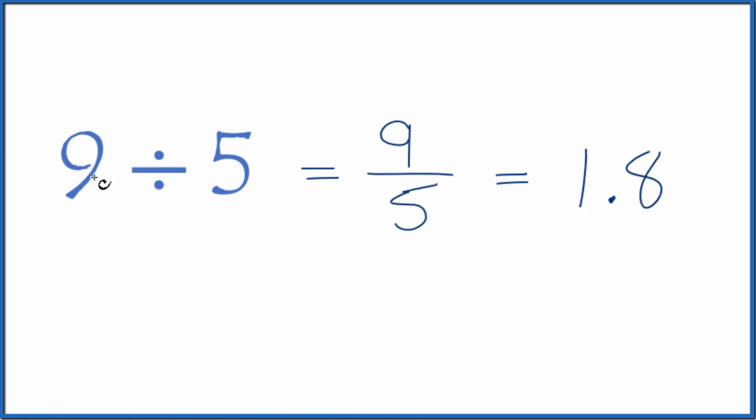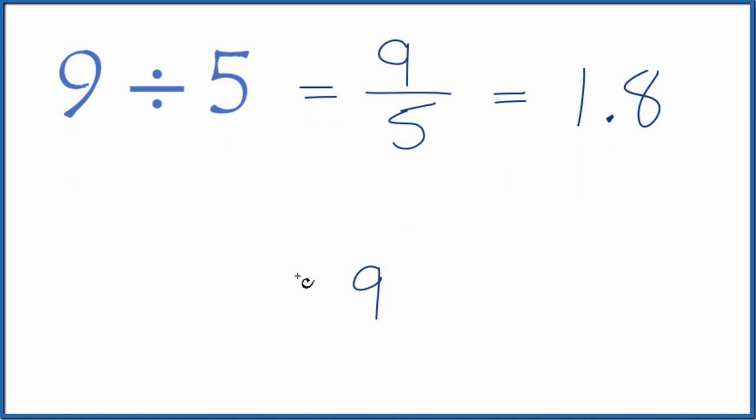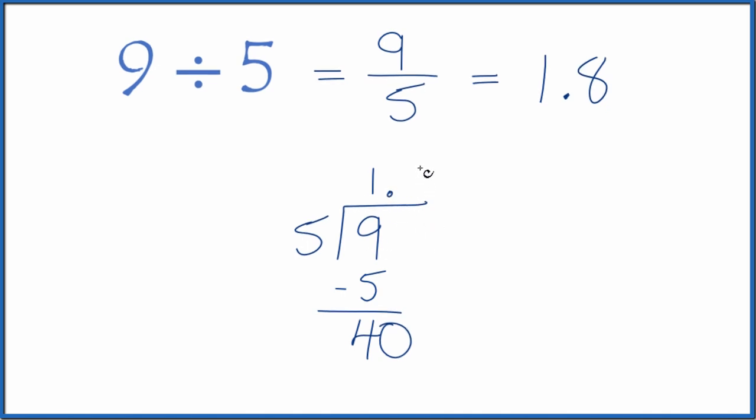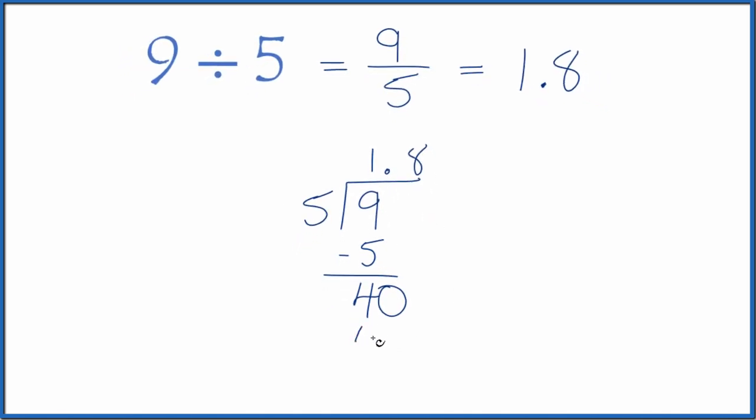You could also do this longhand. Take 9 and see how many times 5 goes into 9. 1 times 5 is 5. If we subtract, we get 4. 5 doesn't go into 4, but let's call this 40 and put a decimal point up here. Now, 8 times 5 gives us 40. We subtract, no remainder.